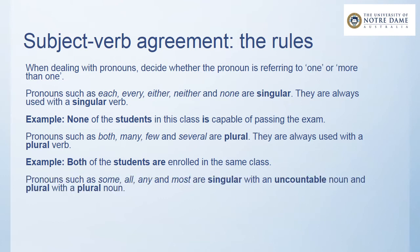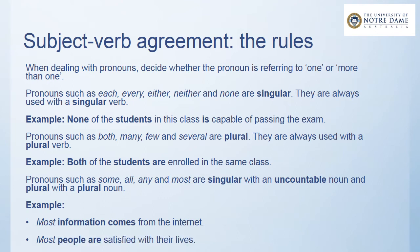Pronouns such as some, all, any, and most are singular with an uncountable noun and plural with a plural noun. For example: 'Most information comes from the internet' — information is uncountable, so we use the singular 'comes.' Or: 'Most people are satisfied with their lives' — people is a plural noun, so we use the plural verb 'are.'